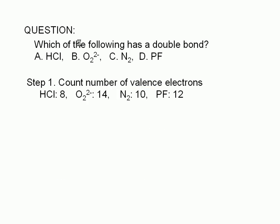To summarize, the total number of valence electrons are: eight for hydrogen chloride, 14 for the peroxide ion, ten for the nitrogen molecule, and 12 for the phosphorus fluoride molecule.